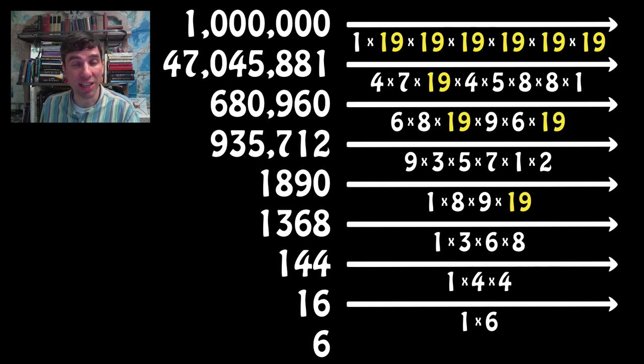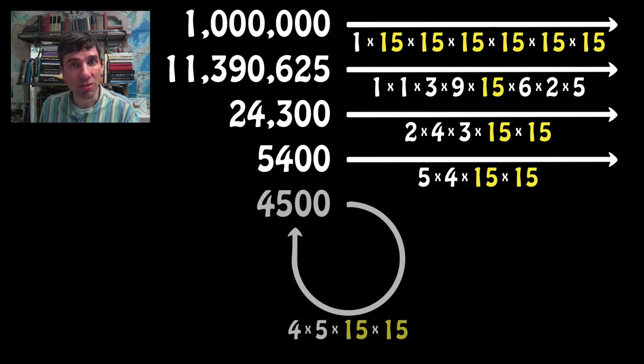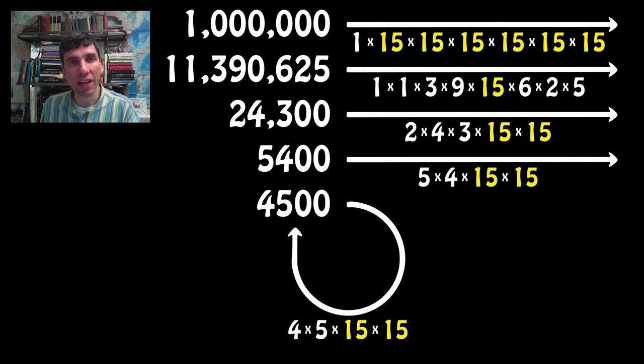Again, just by chance, that digit happened to be 6. If you choose 15, it does not crash to a single digit. Instead, we end up with this loop. 4500 is equal to 4 times 5 times 15 times 15. So it's self-perpetuating. So that will never crash to a single digit.